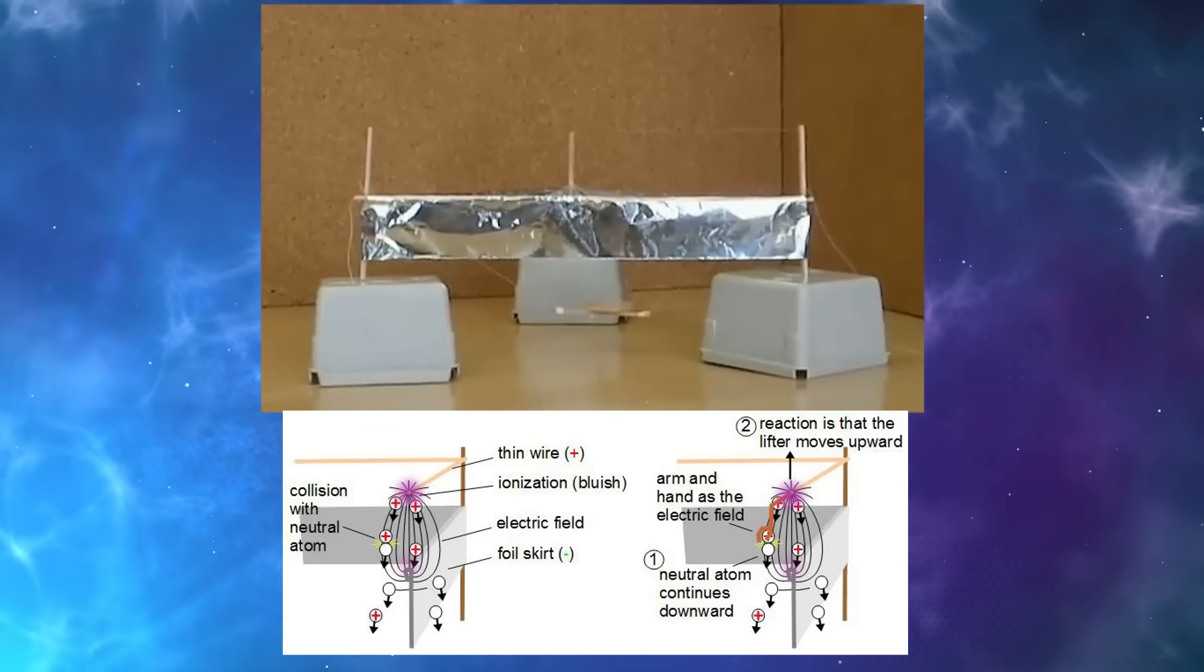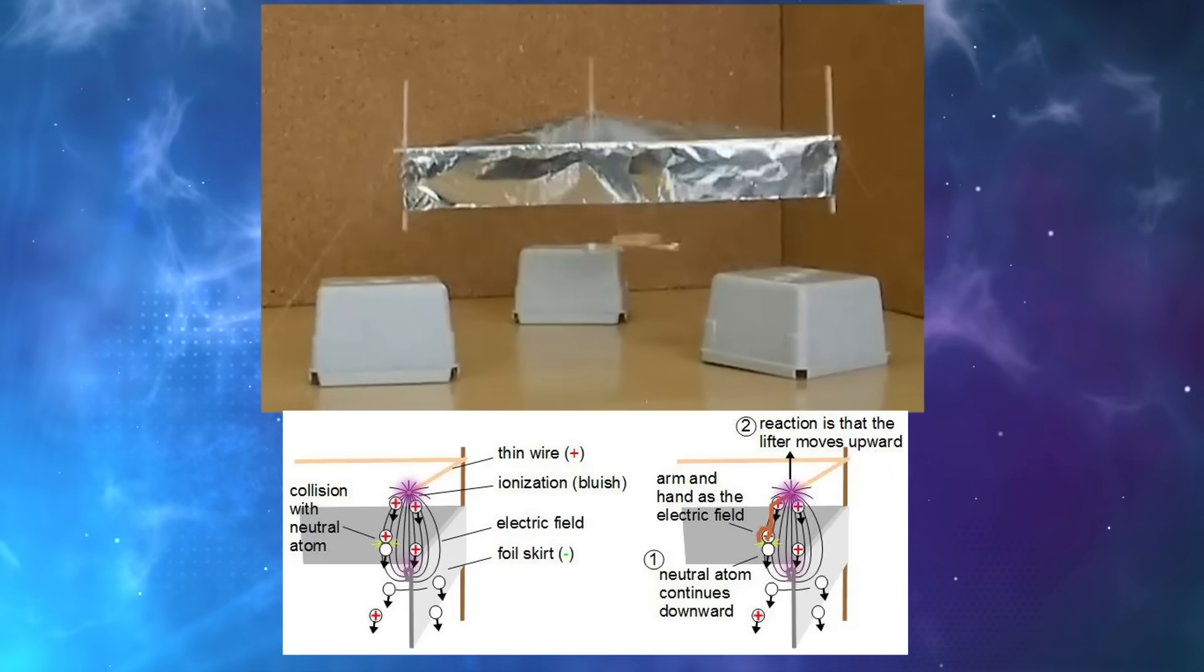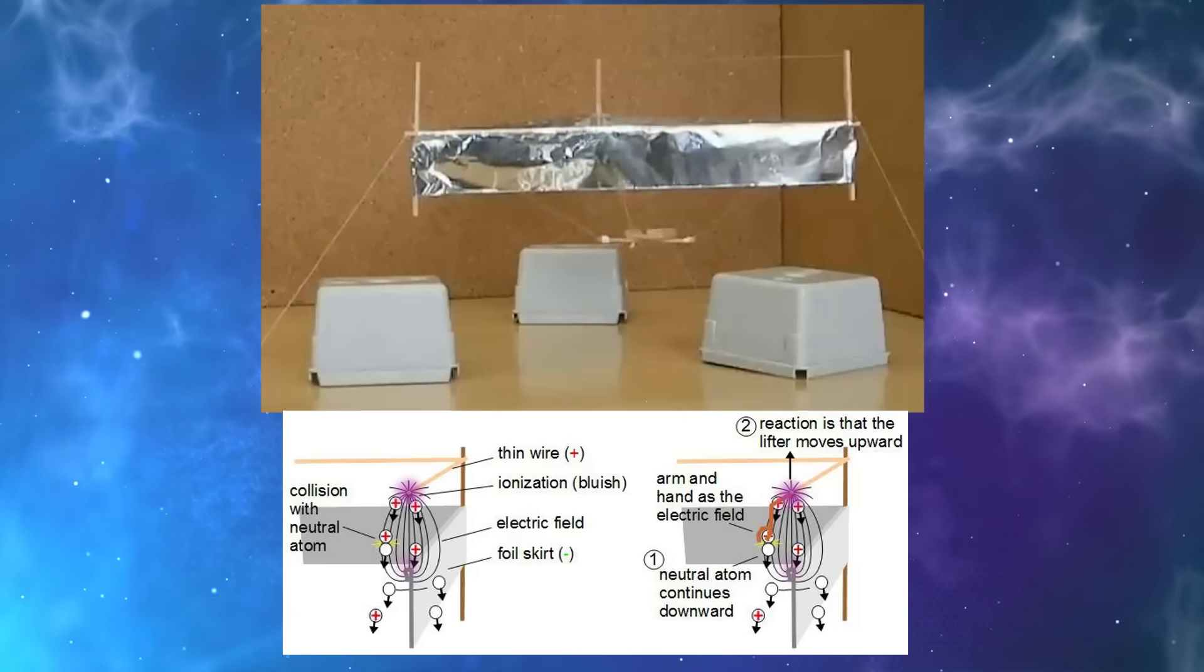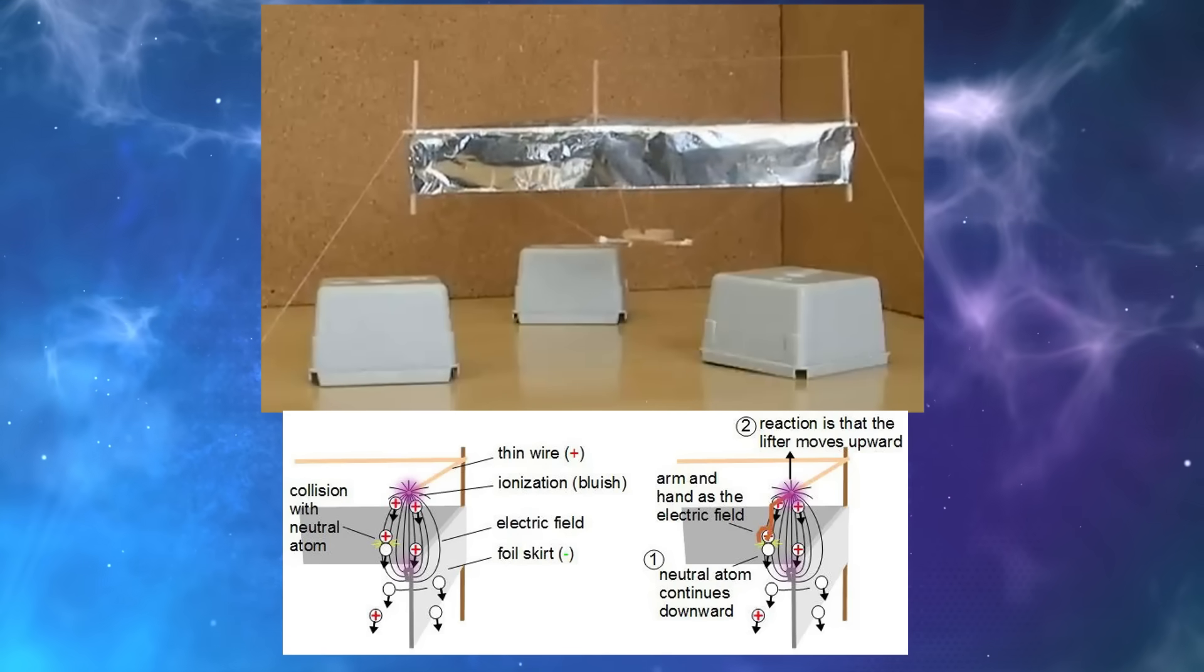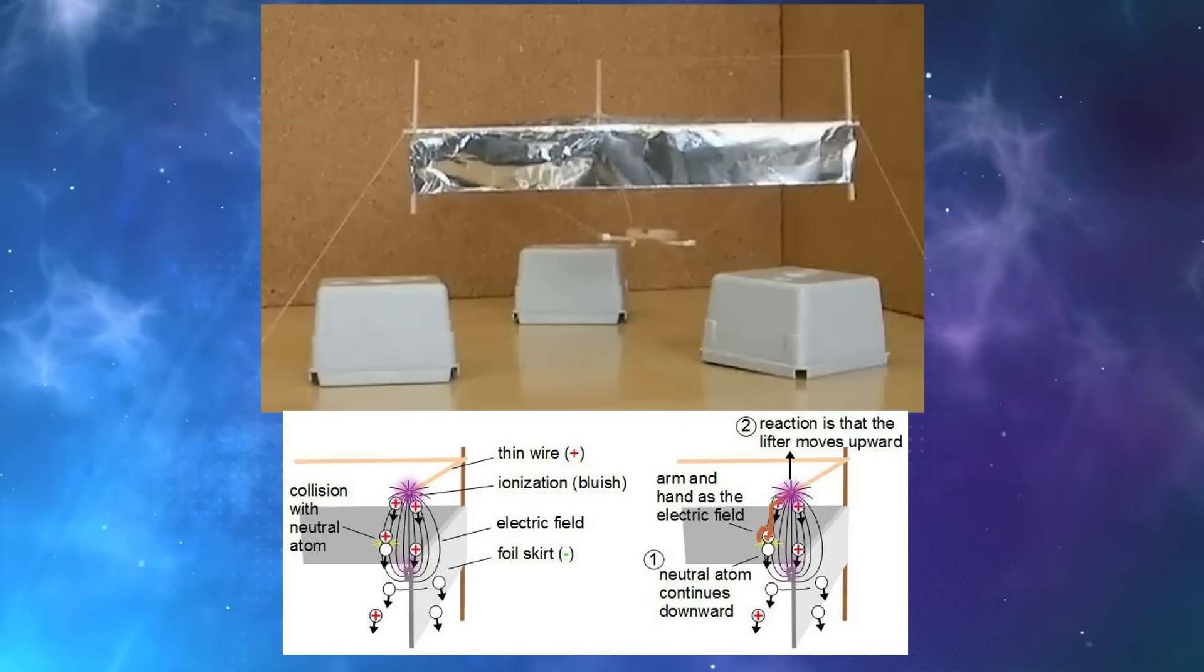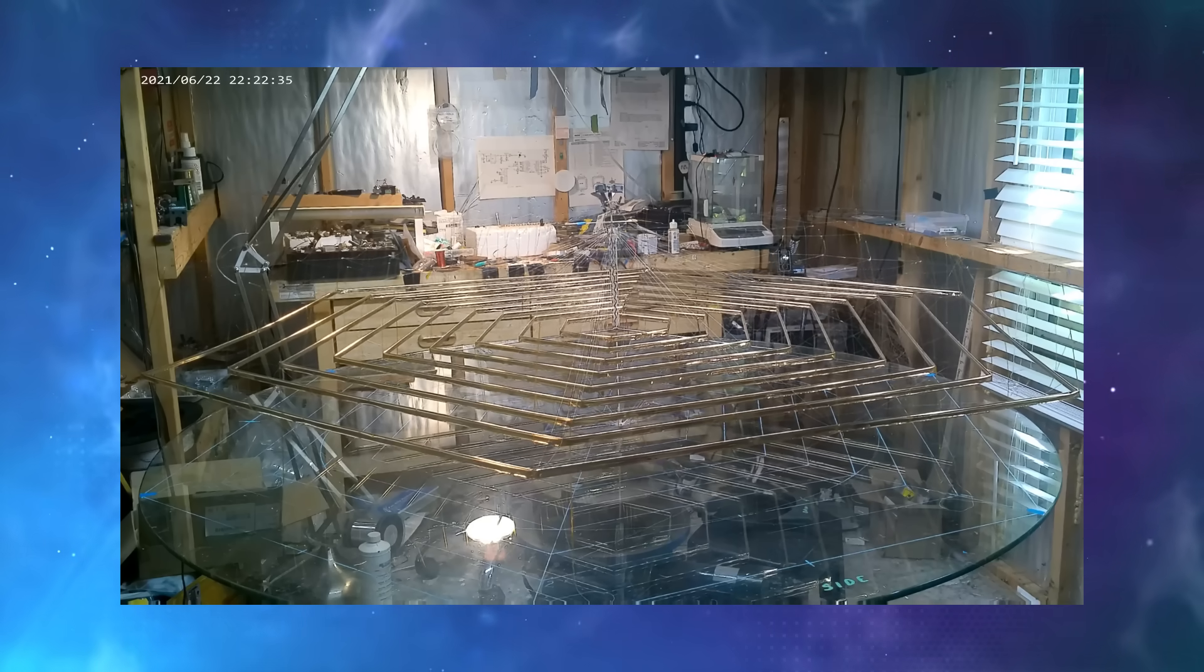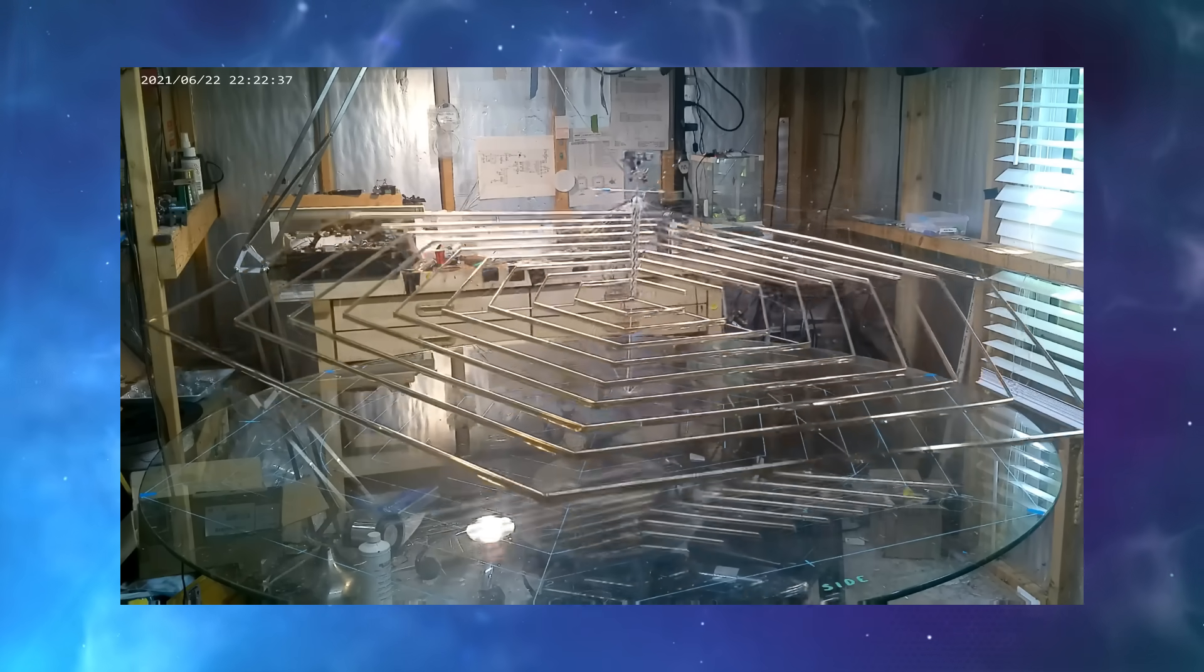They typically consist of a thin wire and a larger foil skirt at the opposite polarity. The ionized air moves towards the smoother foil and bumps into neutral molecules on the way, transferring momentum to the neutral molecules. Inventors like Ethan Cross have taken this a step further, making self-sustainable and remote-controlled craft.